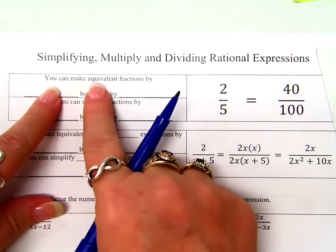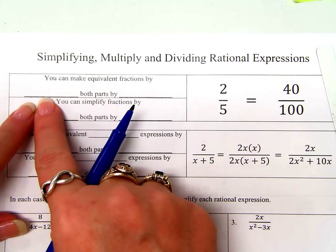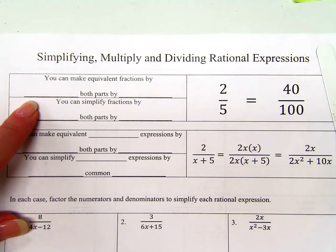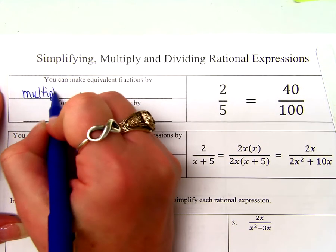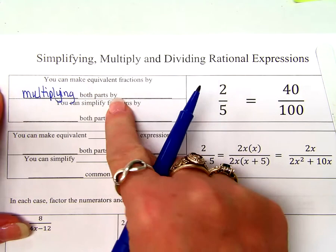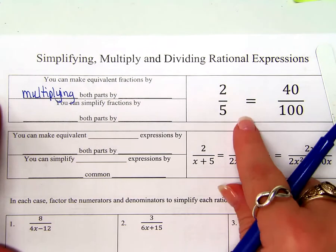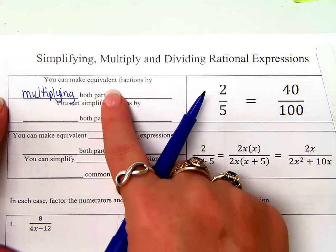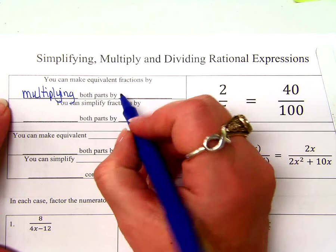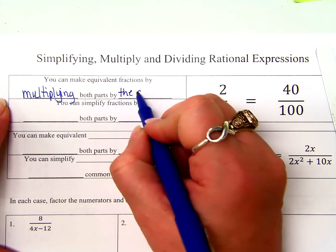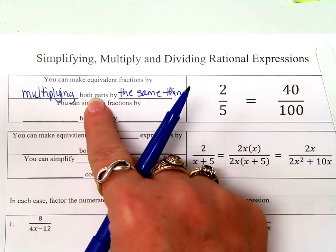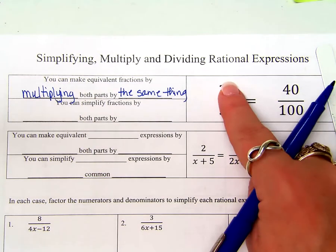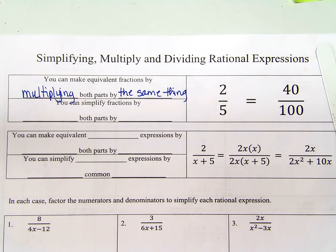Oh, wrong way. If I start here at 2/5 and go to this fraction right here, what have I done? So I have made an equivalent fraction by doing what to both parts?